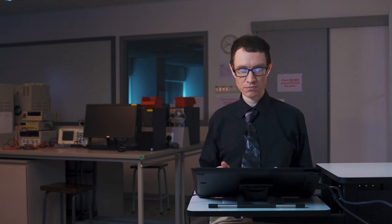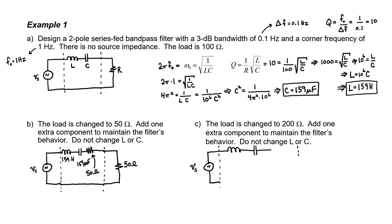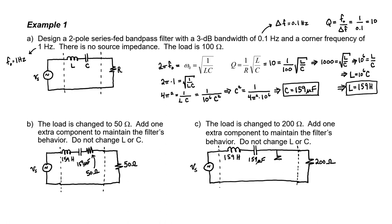What would we do if the load were increased rather than decreased? We can't add a resistor in series to make a resistance smaller. Here the load is going to get bigger — 200 ohms — and we're still assuming the inductance is 159 henries and the capacitance is 159 microfarads. We can't add another resistor in series because that would just make the resistance larger. So the strategy is to add a resistor in shunt rather than in series. Adding a 200 ohm shunt resistor in parallel with the load brings the net resistance down; since they're both 200 ohms in parallel, the combined resistance is 100 ohms, the same as in part A, and the quality factor is preserved.